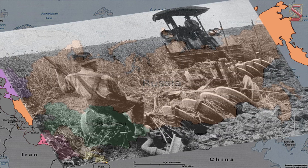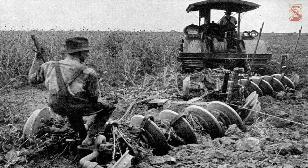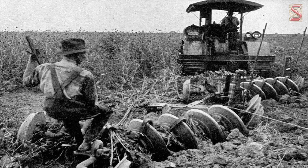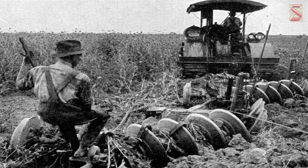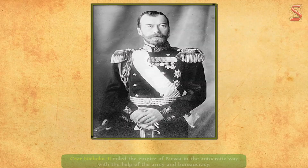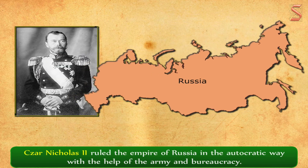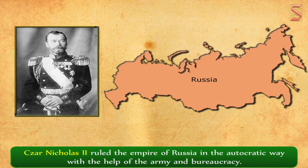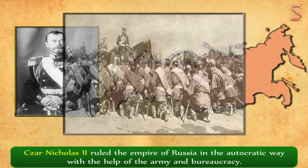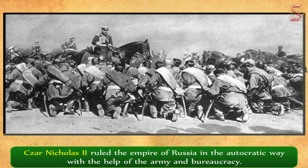The people mainly depended on agriculture for livelihood while the feudal lords had control over the lands. The control of the feudal lords was one of the main reasons for tensions between the peasants and the feudal lords. Tsar Nicholas II ruled the empire of Russia in an autocratic way with the help of the army and bureaucracy.